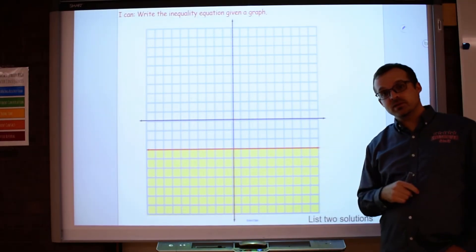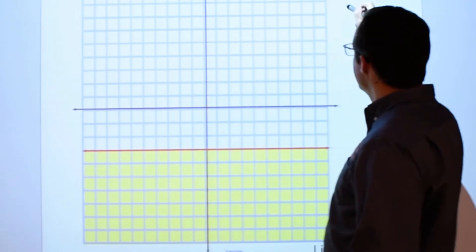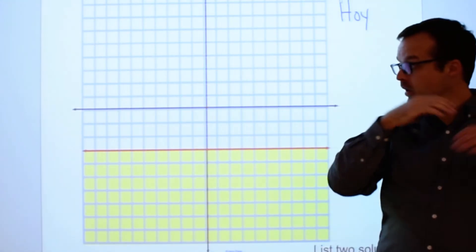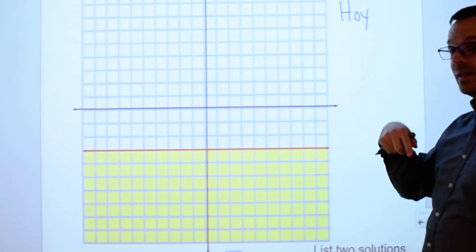All right. Go ahead and pause the video and try this one out. All right. So here we have a horizontal line. And hoy is going to be our best bet here. Remember, we have hoys, which are our horizontal lines, zero slopes, and our vuxes, which were undefined, like on the last example.